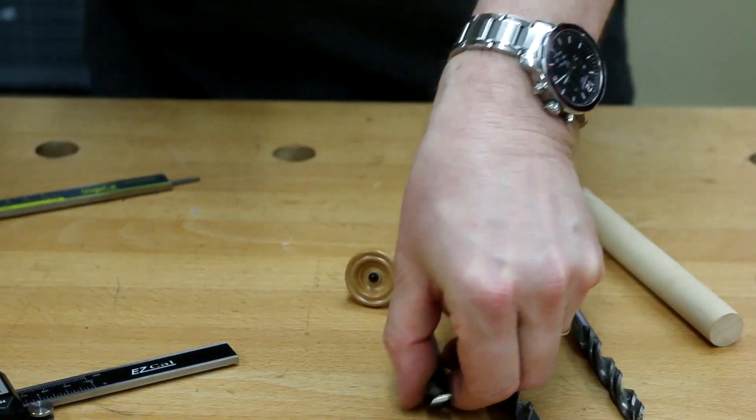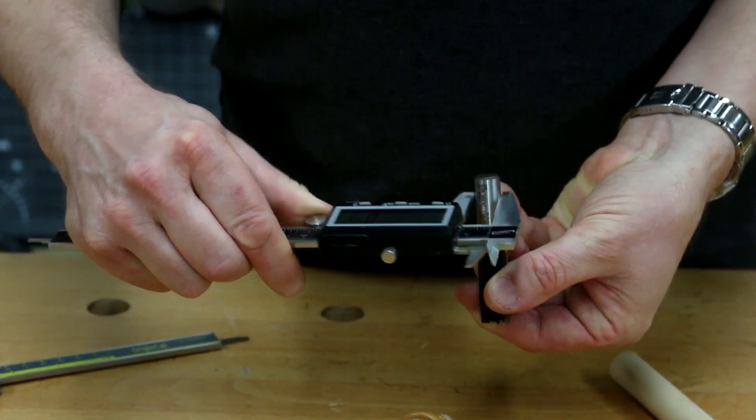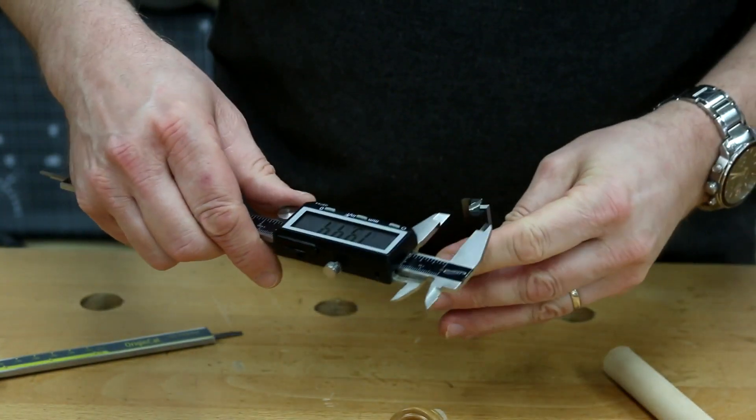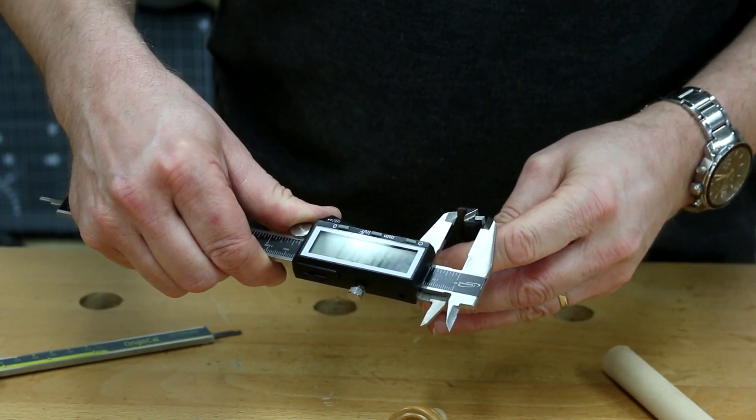I've also then got a half inch shanked router cutter, but actually the cutter on it is metric and it should be coming up to just about 15 millimeter.